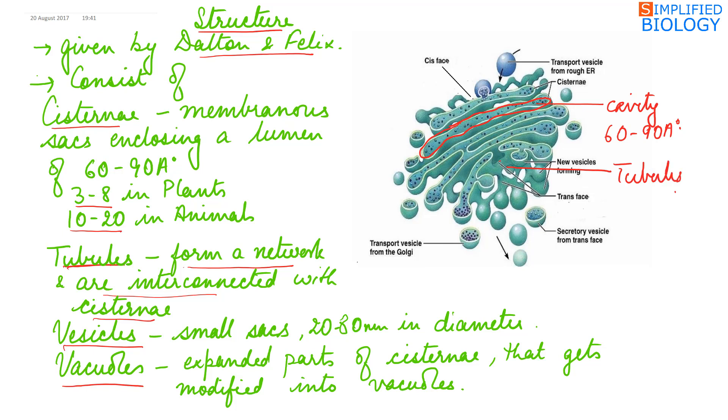Vesicles are small sac-like structures about 20 to 80 nm in diameter while vacuoles are formed from the expanded ends of the cisternae. The expanded ends of cisternae break down to form the vacuoles.